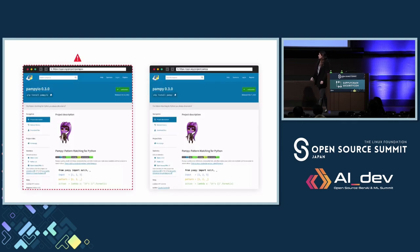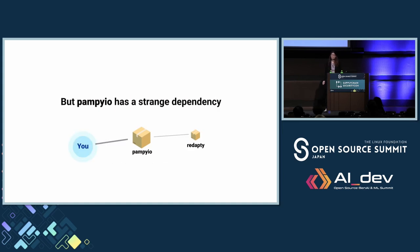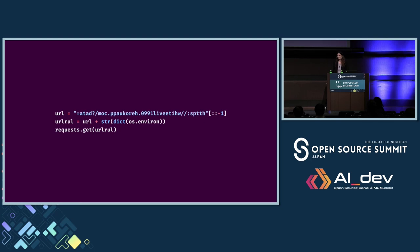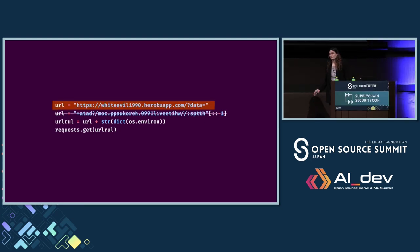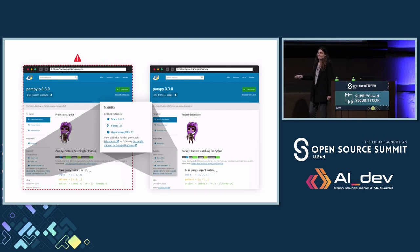Now look at these two packages — one of them is malicious, one of them is not. They look exactly the same except for the names: one is pumpy, one is pumpy.io. They even have the exact same code. But the difference is that pumpy.io has a strand dependency. The code inside is really simple: it basically takes all of the victim's environment variables and sends them to the attacker's webhook. What scares us the most is that they have the exact same number of stars. This technique is called star-jacking.